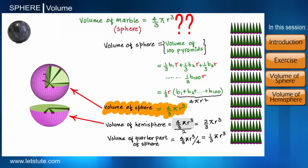Also, in the same way by dividing it with 4, we will get volume of the quarter part of a sphere, which is 1/3 πr³.